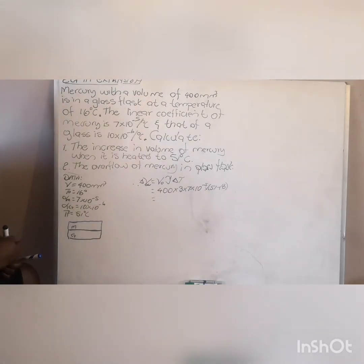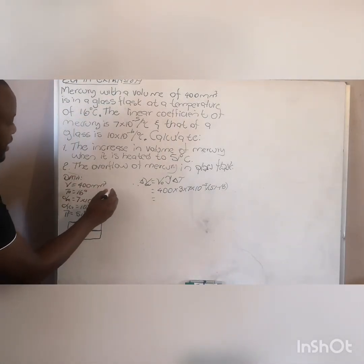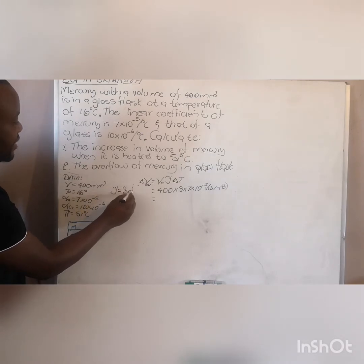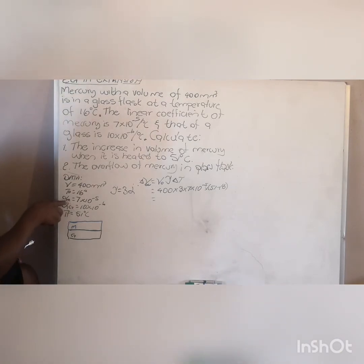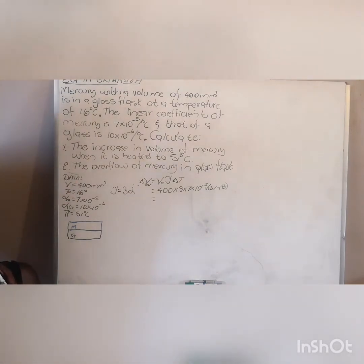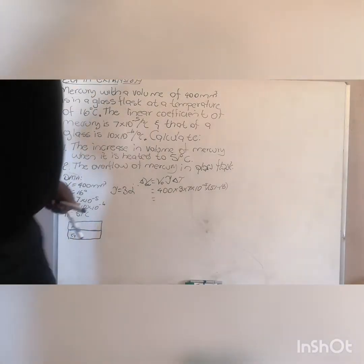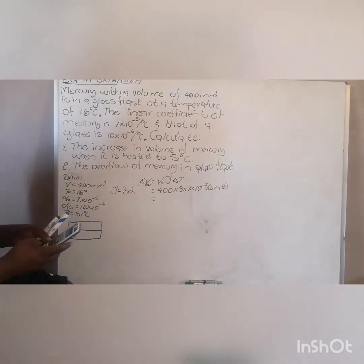Remember: your volume coefficient is three times your linear coefficient of expansion. So the volume coefficient of mercury is three times the linear expansion coefficient. Multiplying by the change in temperature (51 minus 16, which is 35), you get your change in volume. Punching this into the calculator gives 2.94 millimetre cubed — this is the change in volume of the mercury.